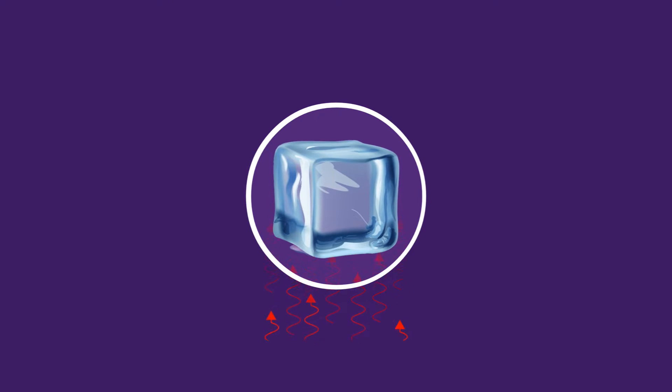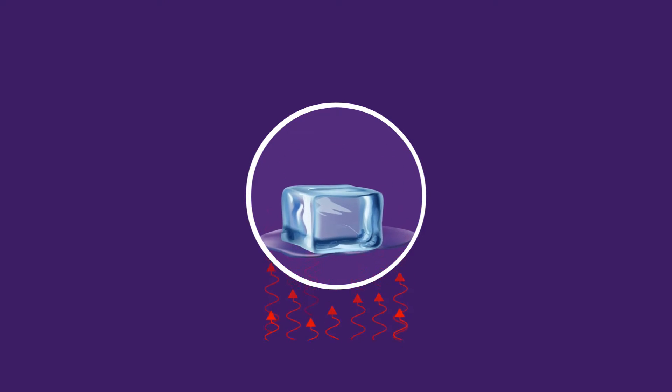If we heat a sample of ice, it will melt to water. With further heating, the water will boil to steam. But what's happening at the molecular level during these processes?